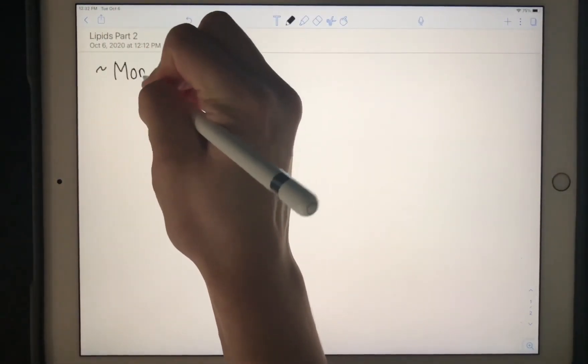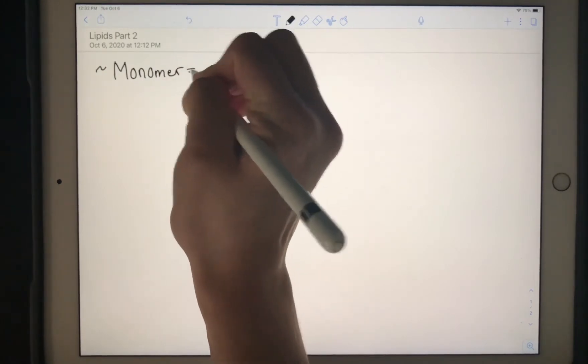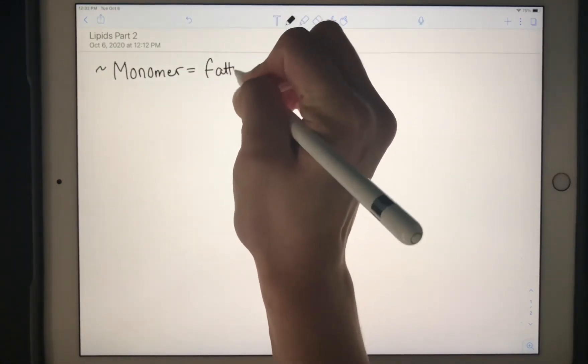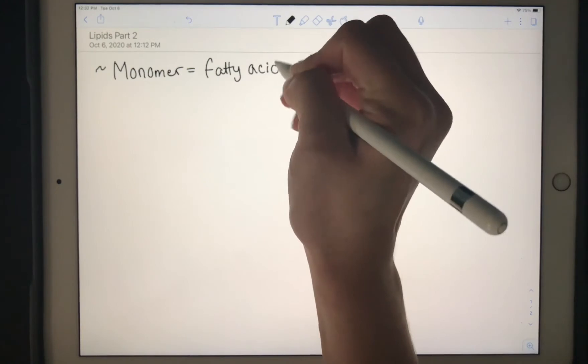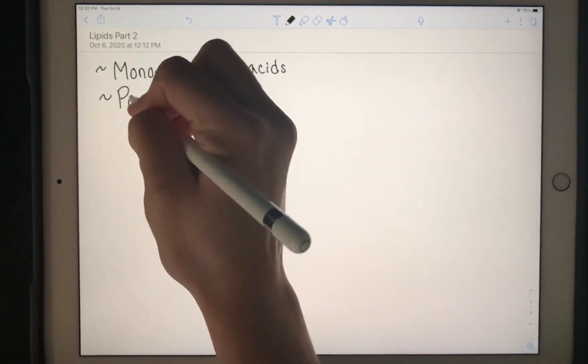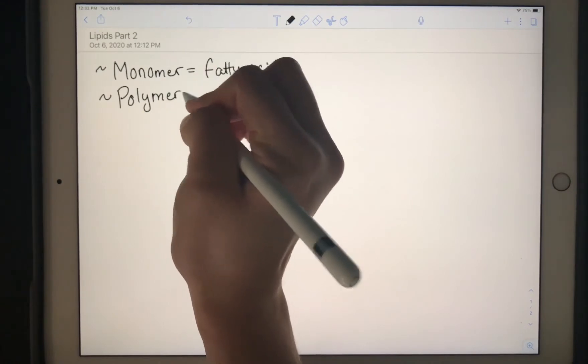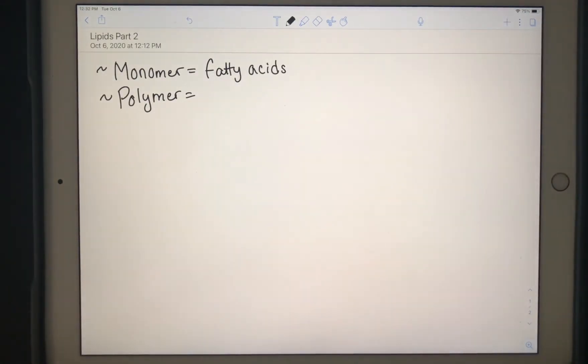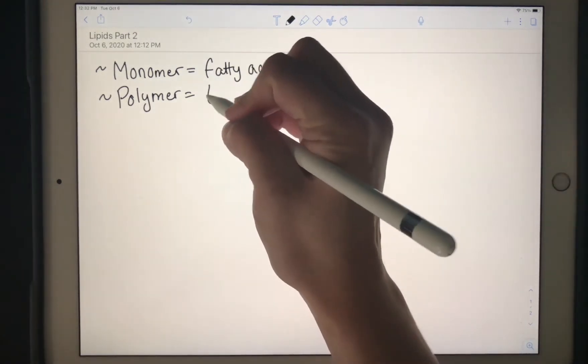So we know for lipids that our monomers are fatty acids. Now it's time to talk about how we convert those fatty acids, connecting them together to make them a polymer. There are several types of lipid polymers, but the one that we're going to talk about right now is called a